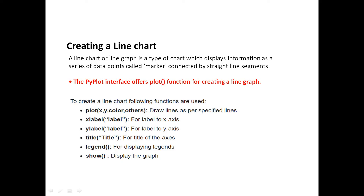A line chart is a type of chart which displays information as a series of data points called markers connected by straight line segments. One data point is called a marker connected by a straight line segment, and that is how we draw a line chart.